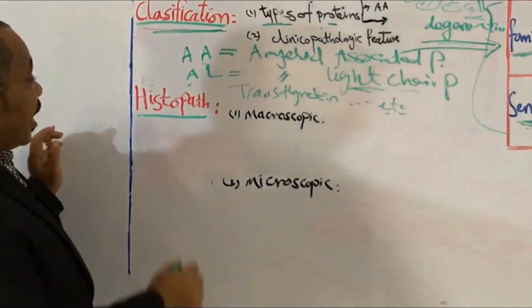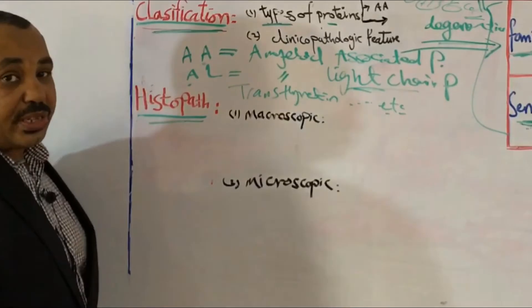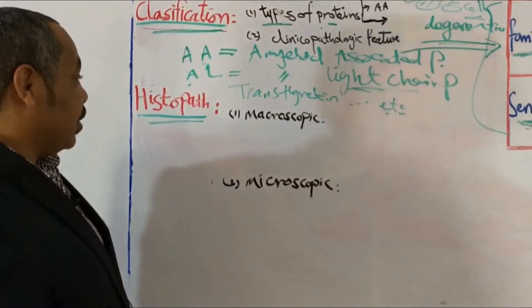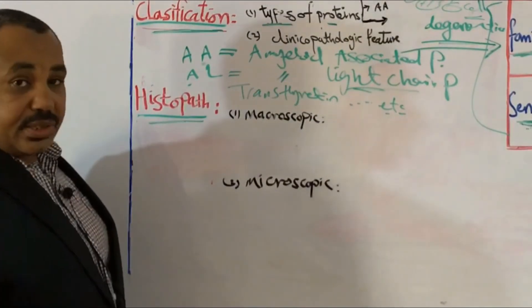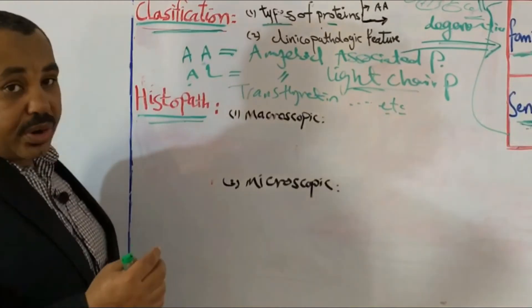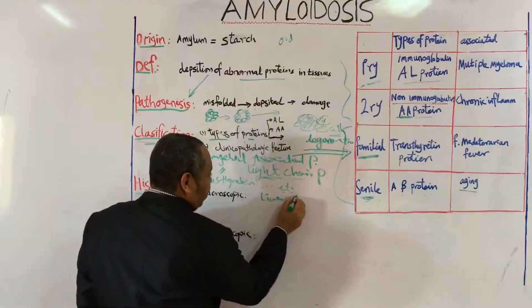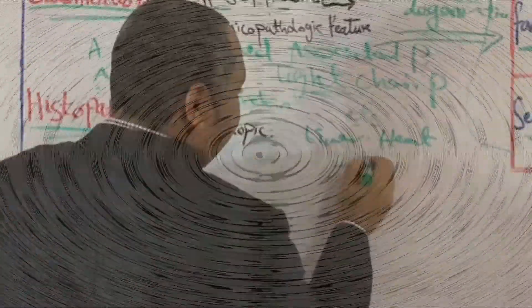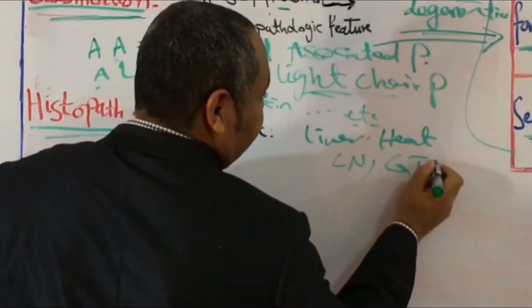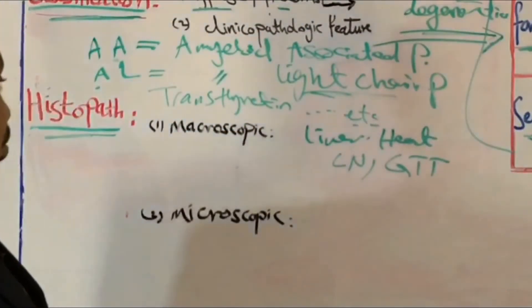Okay, let us go over the last point here. What are the histopathological changes which will take place in amyloidosis? Actually, amyloidosis affects specific organs like liver, heart, CNS, GIT, starting from the tongue, intestine, and so on.